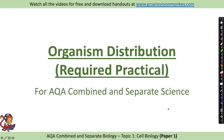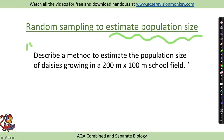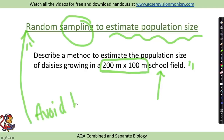Organism distribution required practical. There are two different ways we are going to look at to sample organisms: the first one is random sampling and the second one is transects. Random sampling might be used to estimate a particular population size. For example, you might get a question like: describe a method to estimate the population size of daisies growing in a 200 meter by 100 meter school field. We can't count every single daisy — it would take too long — so we need a method of sampling that is completely random, and if they ask why in the exam, it is to avoid bias.